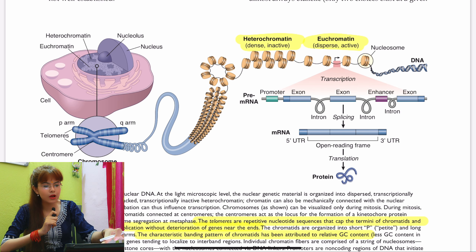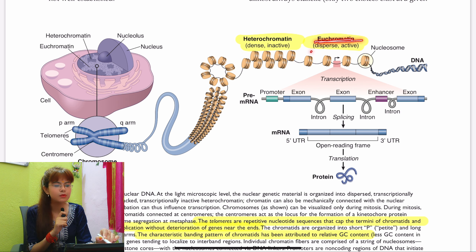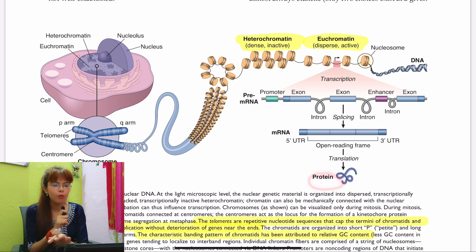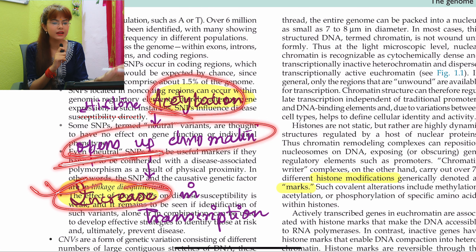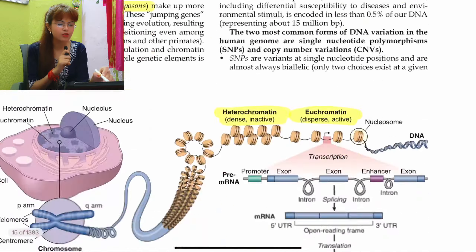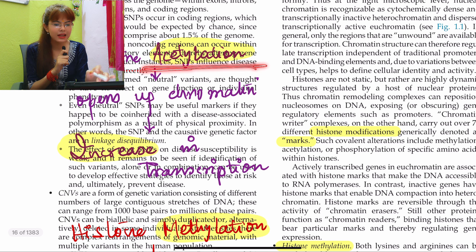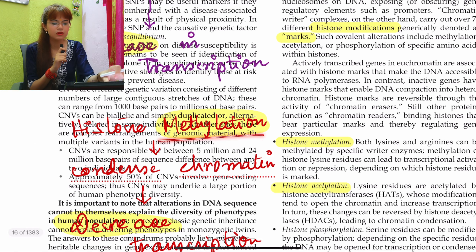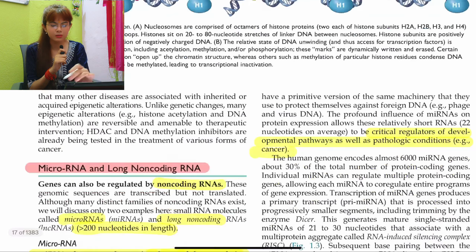Heterochromatin is the inactive form of chromatin that does not undergo transcription. Euchromatin is the dispersed, active chromatin that undergoes transcription and translation to form proteins. Histone acetylation opens up the chromatin and increases transcription. Methylation, on the other hand, condenses the chromatin and decreases transcription. This is an important concept to understand.